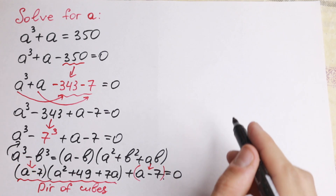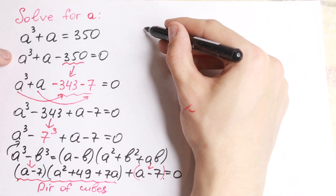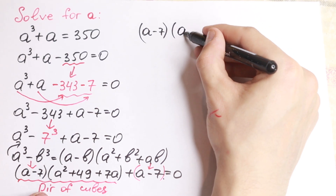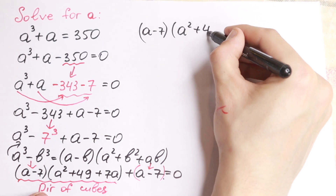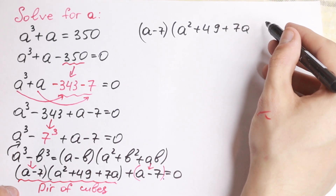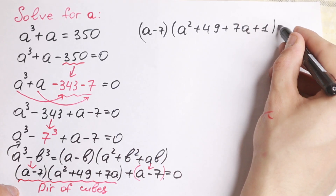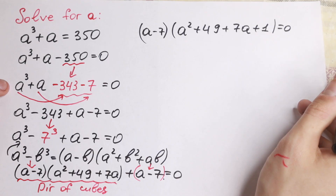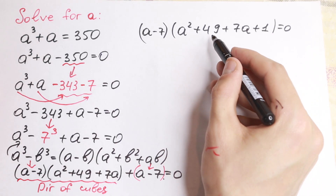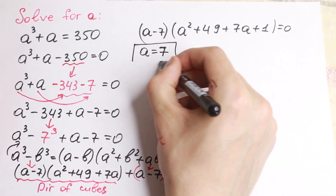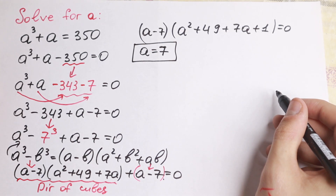Let's factor this expression. If we factor out a minus 7 we will have a minus 7 and in the other parentheses we will have a square plus 49 plus 7a plus 1 equal to 0. Finally we have factored our equation. If a product equals 0 then one factor equals 0 or the other equals 0. So a minus 7 equal to 0, giving us a equal to 7 — this is our first real root.